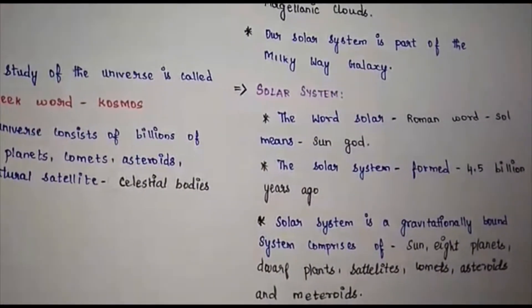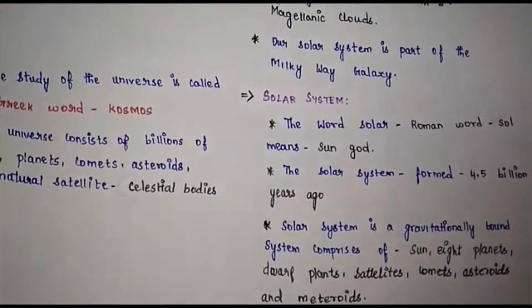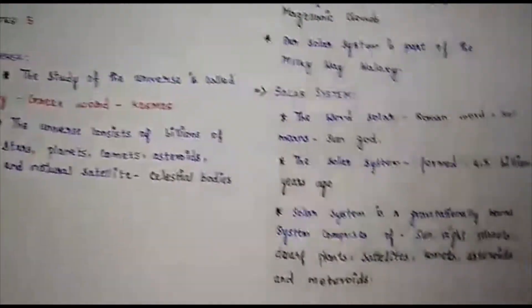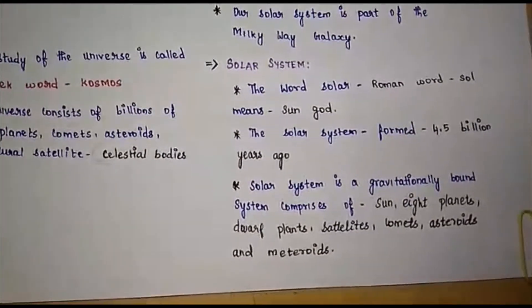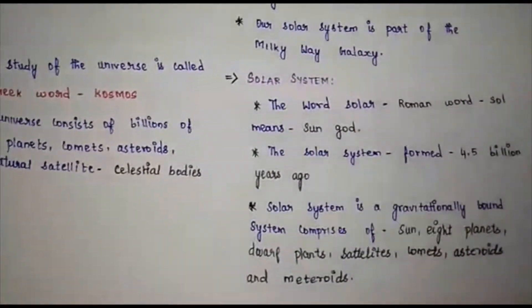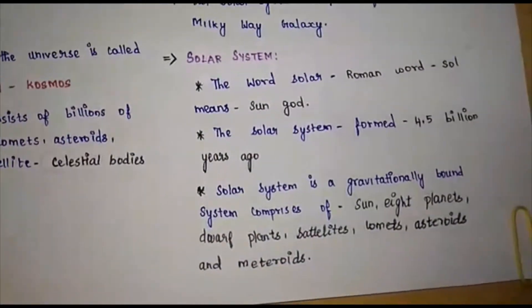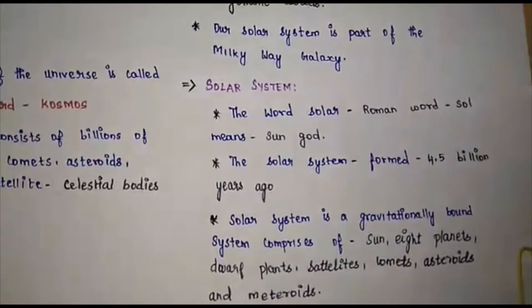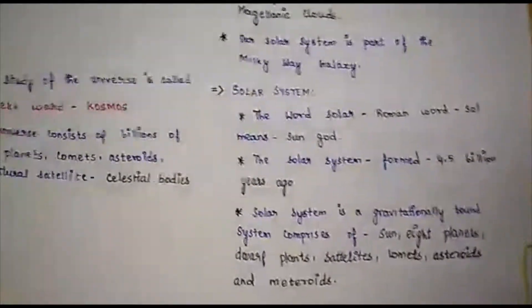Now the solar system is believed to have formed about four billion years ago. The solar system formed approximately four billion years ago, that is what we believe.